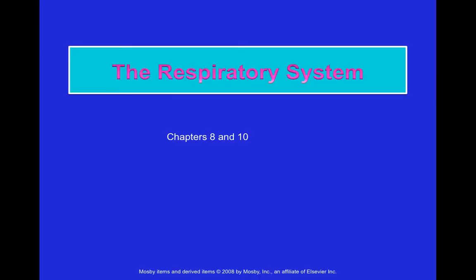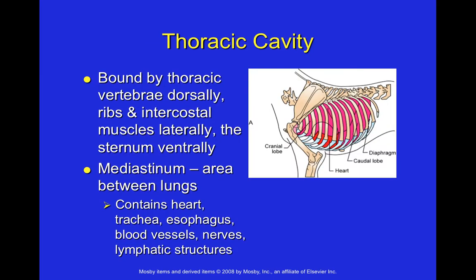We'll start with the respiratory system. When talking about the thoracic cavity, there are a couple of different ways to describe it. 'Thoracic cavity' refers to the thorax, which is the area where the lungs and ribs are. Another way to describe it is the 'pleural cavity.' In the same context, the abdomen is referred to as the 'peritoneal cavity.'